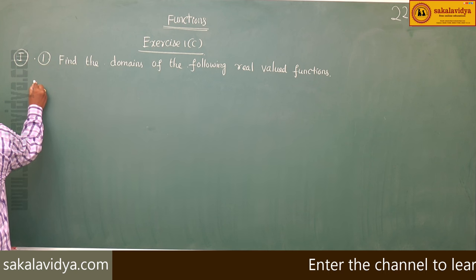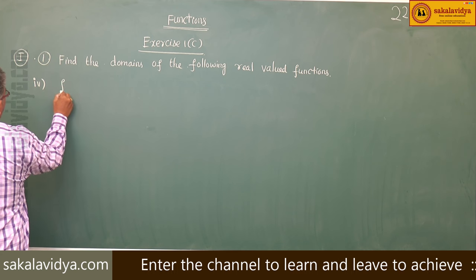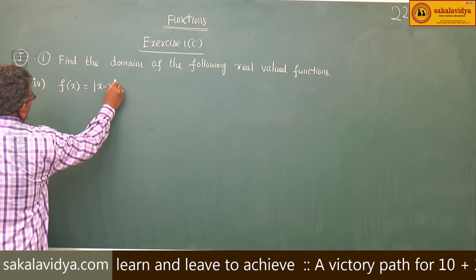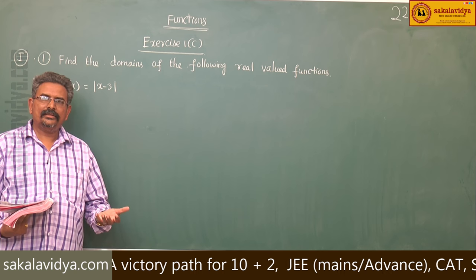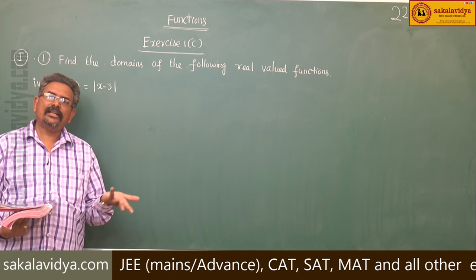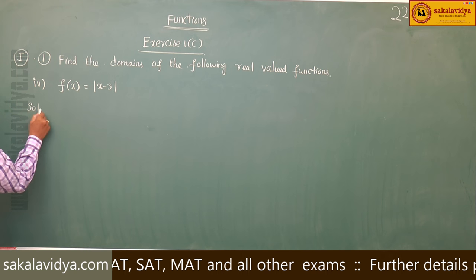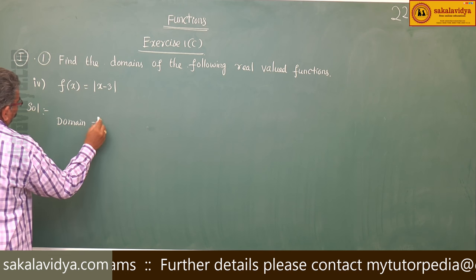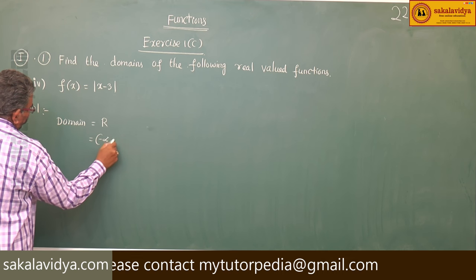Fourth problem: f of x is equal to mod of x minus 3. Modulus of x minus 3 — we have already discussed the modulus function. The domain of the modulus function is all real numbers. So here, domain is equal to ℝ, that is minus infinity to infinity.